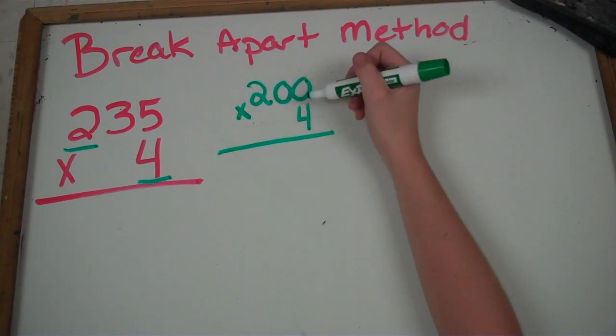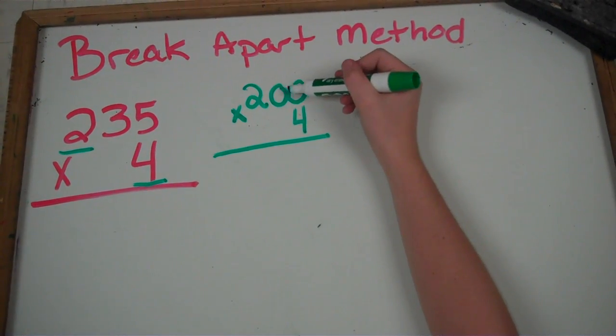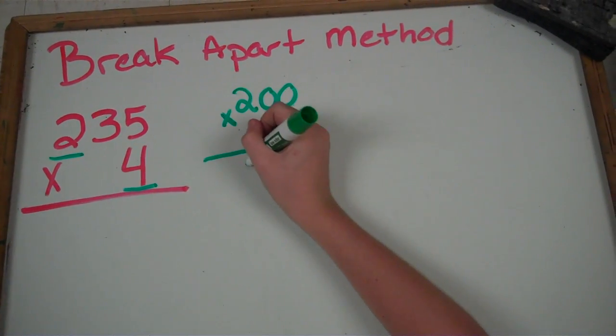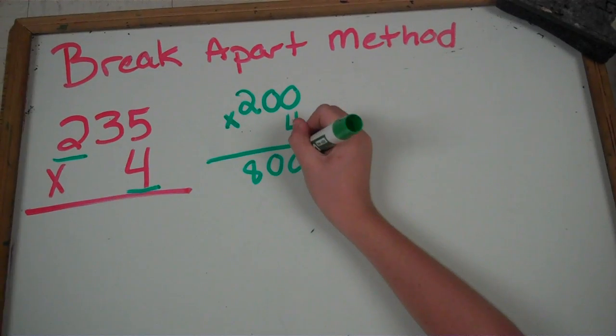Here's a trick that you can do. Since this is just 2 zeros, you can just do 4 times 2, which is 8, and bring down the 2 zeros and you get 800.